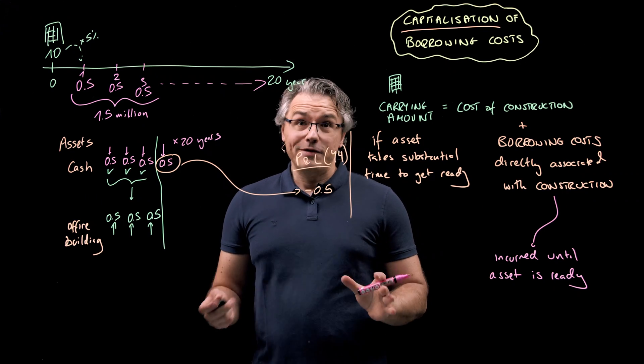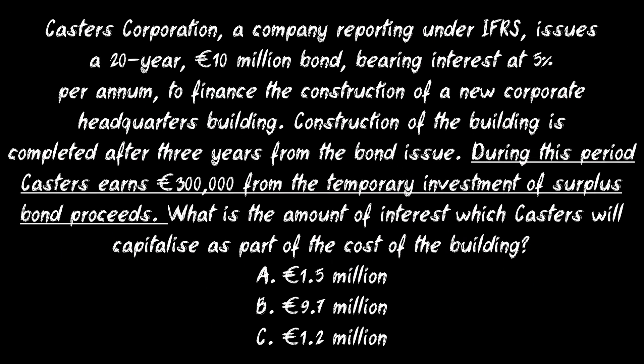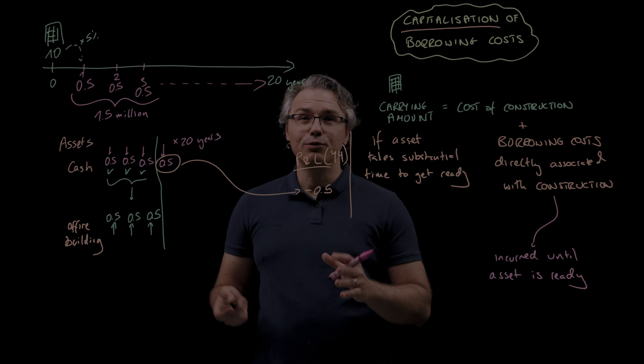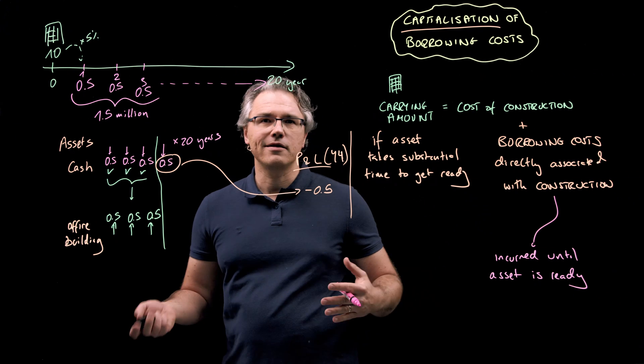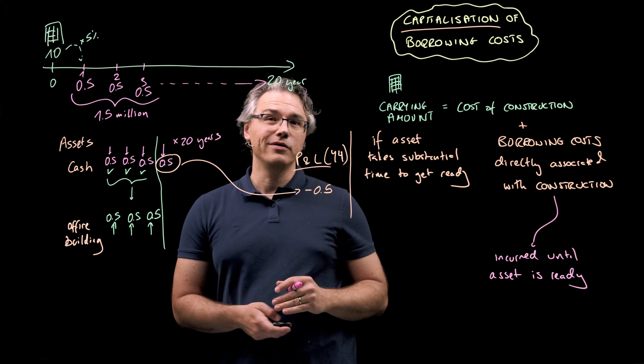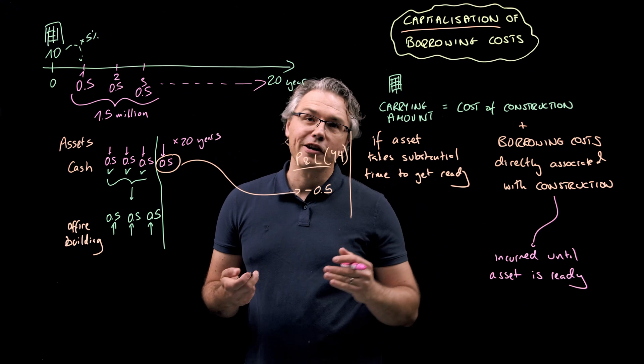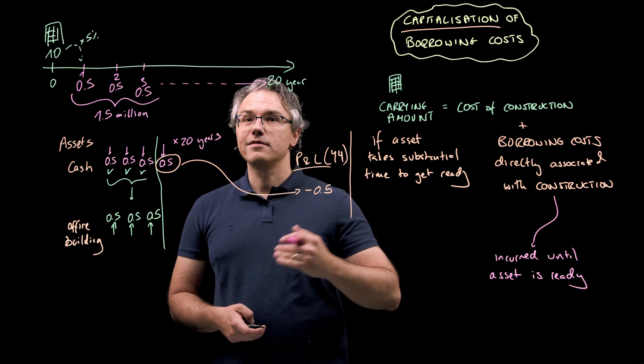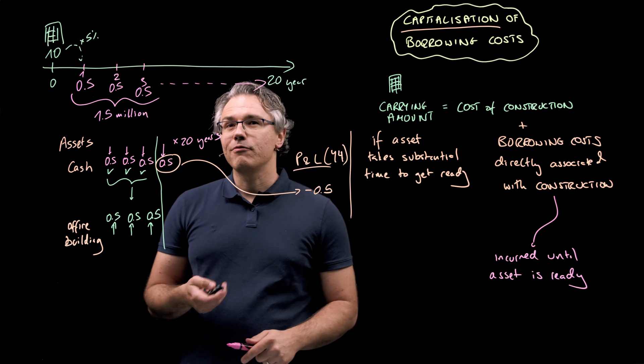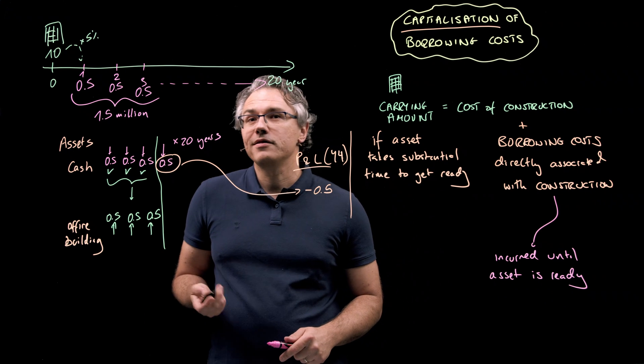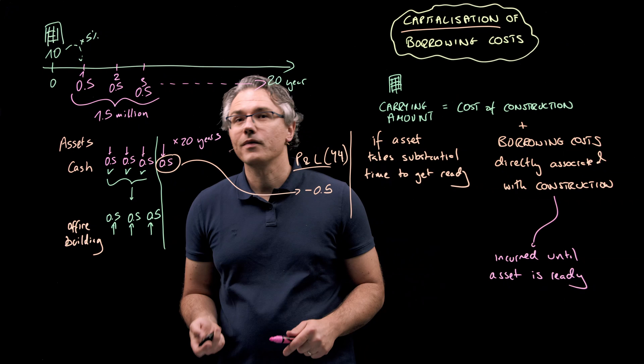Now for the tricky bit. What should we do with the information that there was 300,000 euro of income generated from the temporary investment of surplus bond proceeds? And I guess you can easily imagine the scenario here. The company raises 10 million euro needed to finance the construction with a single bond issue right at the very beginning, but the entire amount isn't really needed straight away. So some of it gets invested and quite naturally that will result in some income being generated from the temporary investment of borrowed funds.